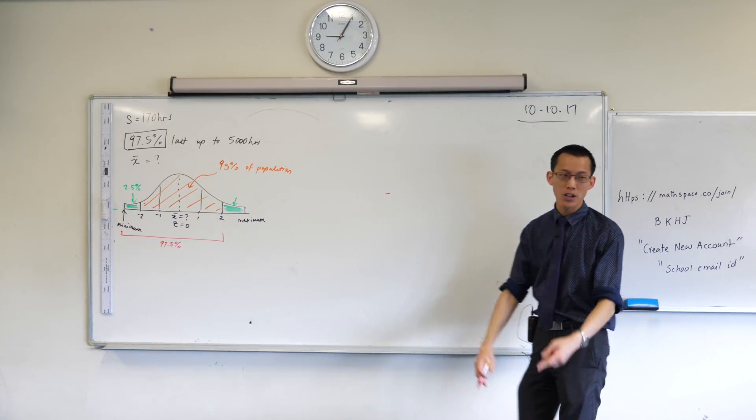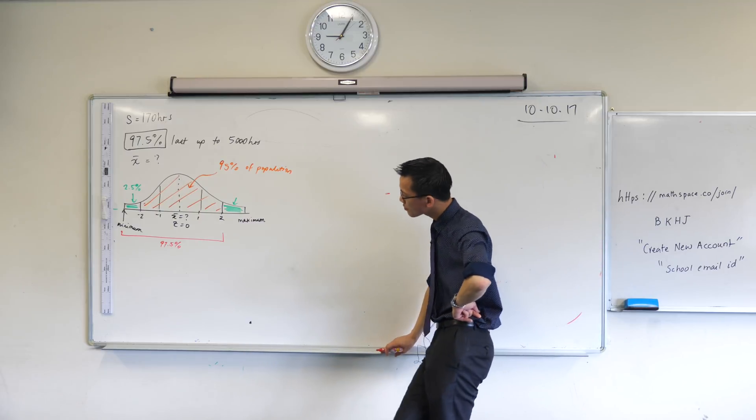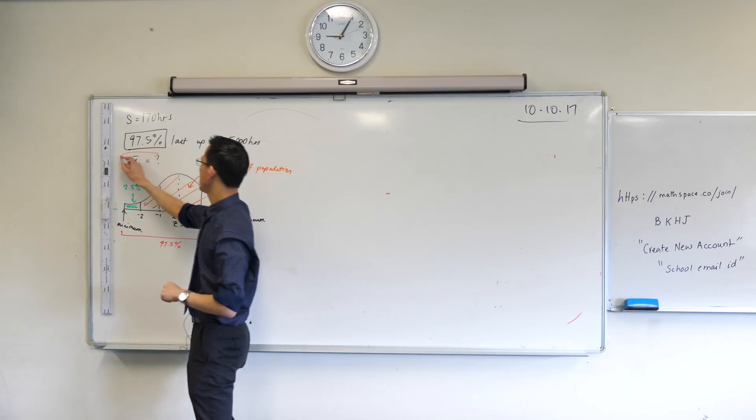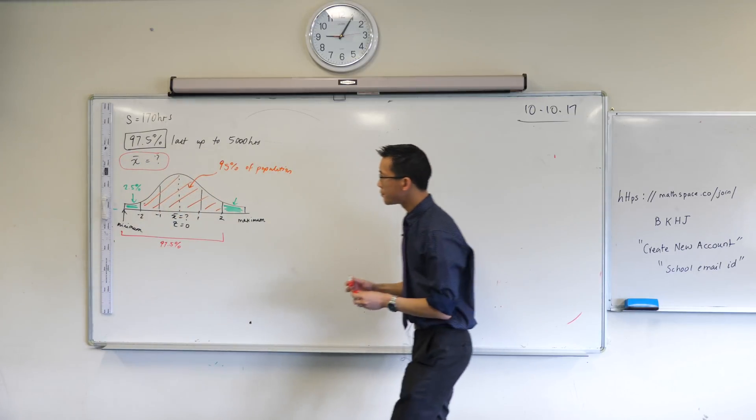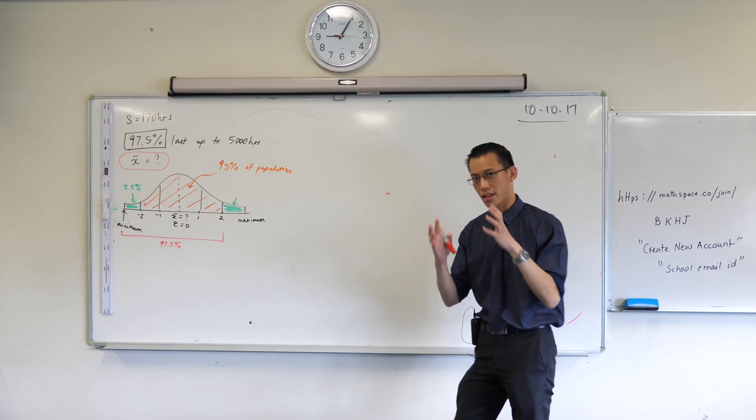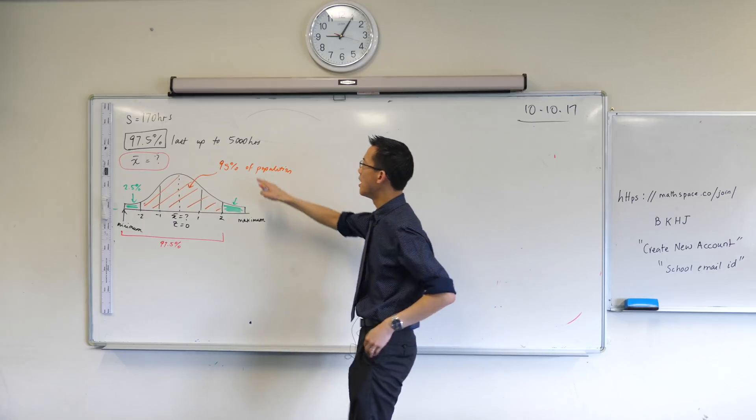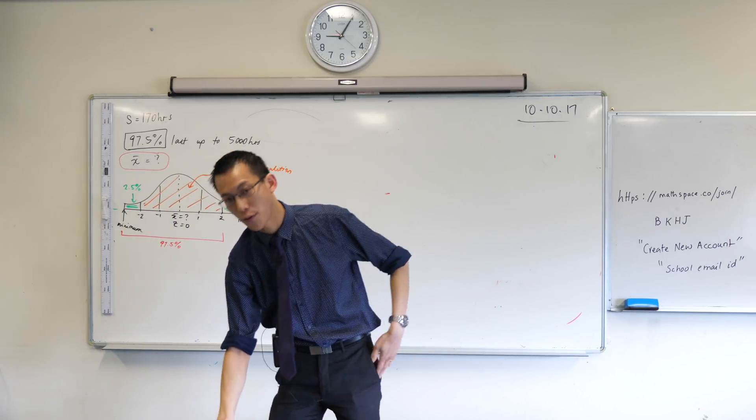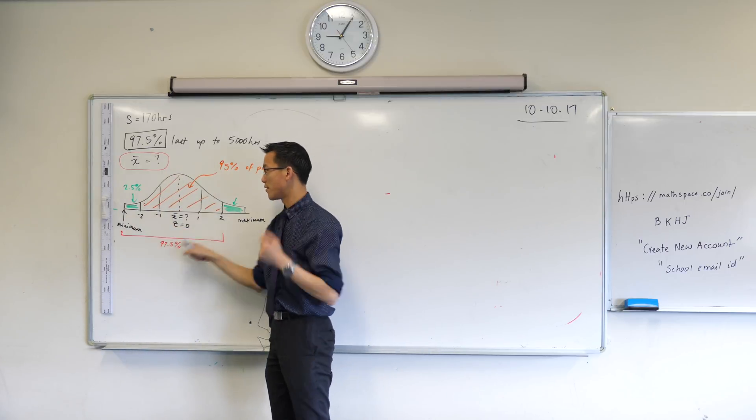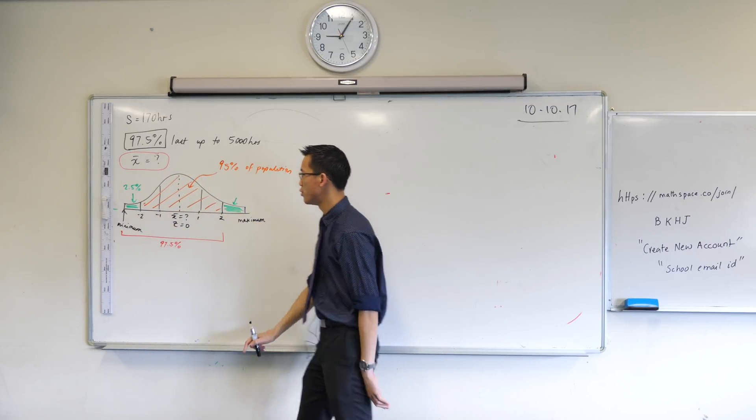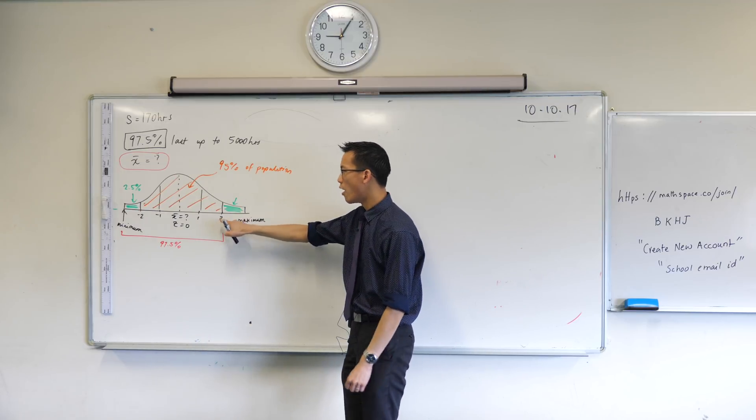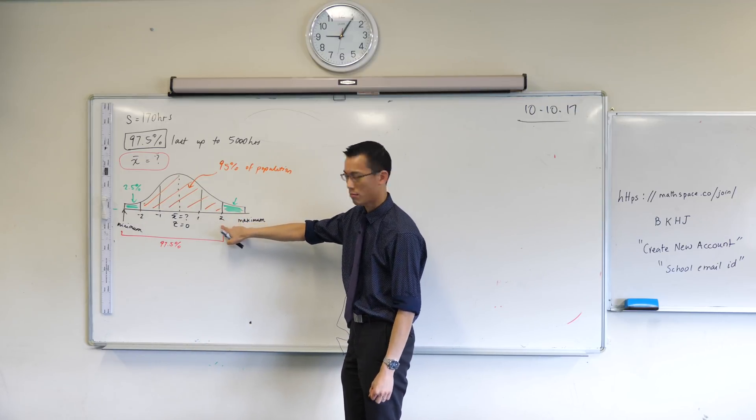So now we know where the 97.5 comes from. What we need to say is, how do I use that to actually answer this question? Well, I can imagine that there is a specific light bulb that has exactly 5,000 hours lifespan. Based on this work to understand the normal distribution, I can say that 5,000 hour light globe has a z-score of exactly 2.